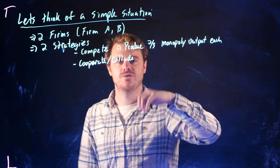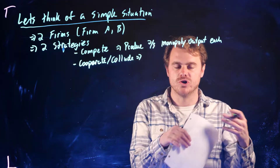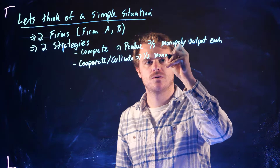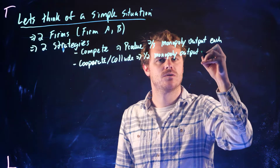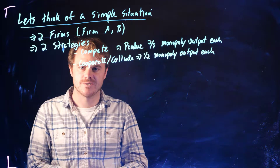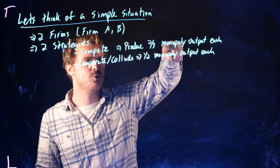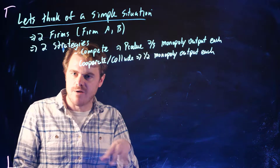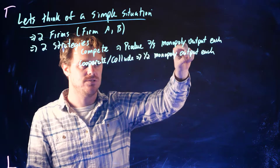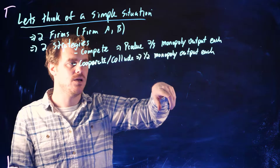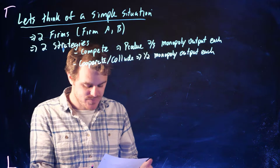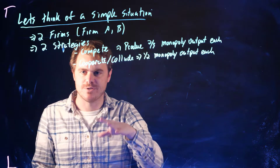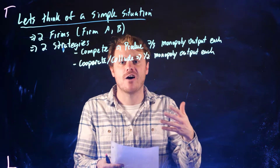Each firm has these two strategies. If they compete, producing two-thirds of output each gives a high total quantity and therefore a lower price, resulting in relatively lower profits. If they cooperate and each produce half the monopoly output, quantity is low, price is high, and profits are higher. Let's translate these strategies into a payoff matrix.